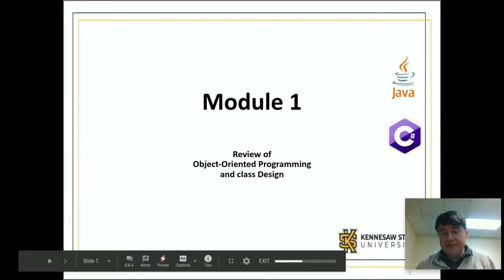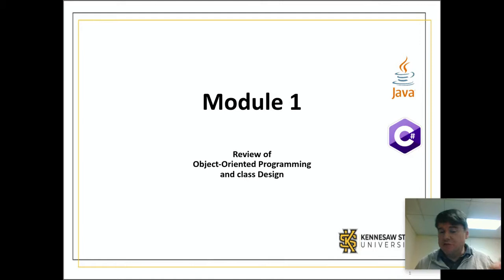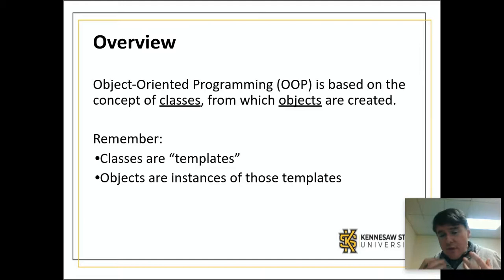Hey folks, in this video we are going to do a review of object-oriented programming, and this is something that you have most likely covered in CSE 1321, so hopefully most of this will not be new to you. We're going to talk about all the different attributes of object-oriented: how to define a class, how to define variables, how to define methods, what a constructor is, how you might have default constructors and overwritten constructors, the difference between public, private, and protected, and also what a static variable is and how you might use a static variable.